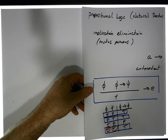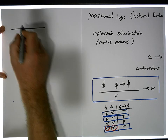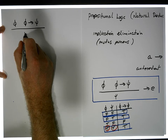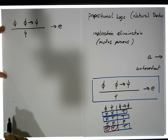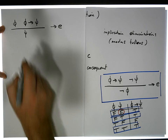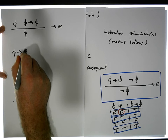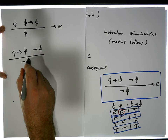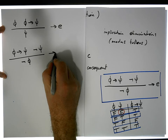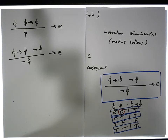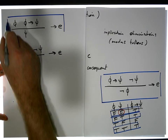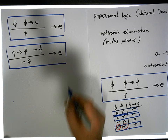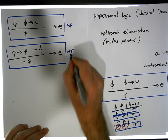Let me write these two rules again in compact form. Modus ponens: if φ is true and φ implies ψ is true, then ψ must be true — that's implication elimination. Modus tollens: if φ implies ψ is true and the negation of ψ — the negation of the consequent — is true, then the negation of φ, the negation of the antecedent, must also be true. These are the two important rules, modus ponens and modus tollens.